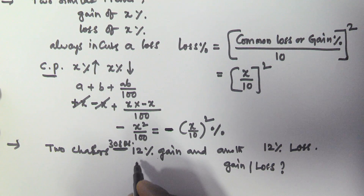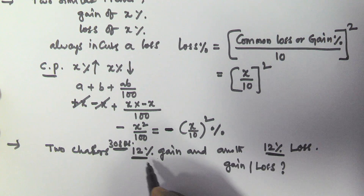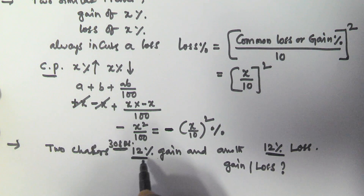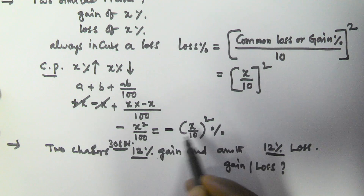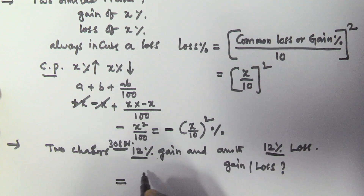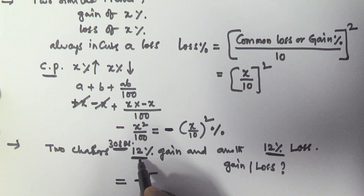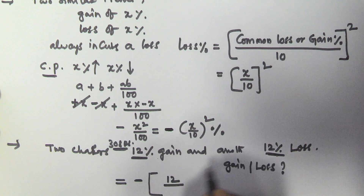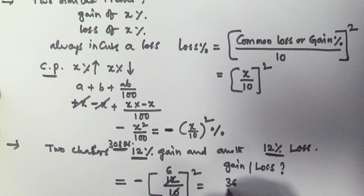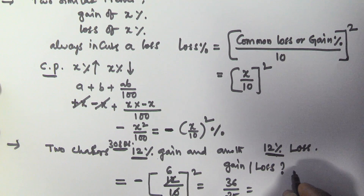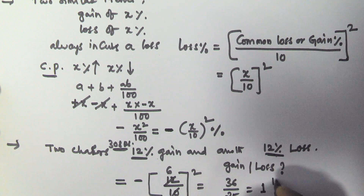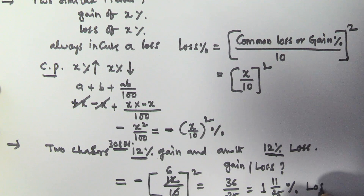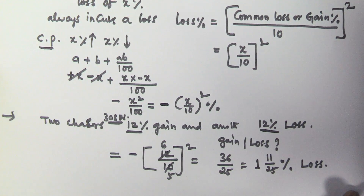In this case, we have 12% gain and 12% loss, so the common loss or gain is 12. As we established, it is always going to be a loss. The loss percentage is given by (12/10)² = (6/5)² = 36/25 = 1.44%, which equals 1 and 11/25 percentage loss.